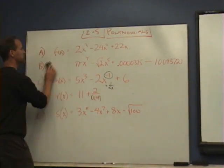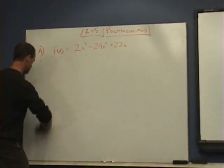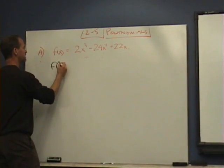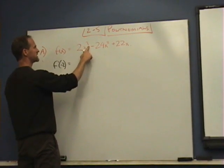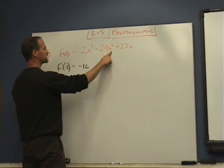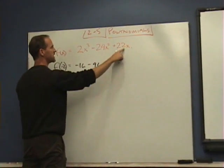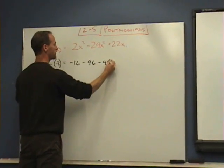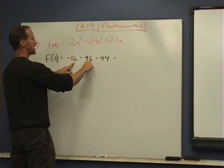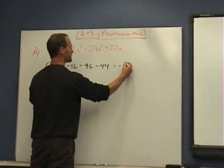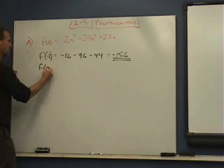If we go back to our original one, this is the type of thing you might have as a homework problem. They might ask you to find f(-2) for instance. Well, we just take that -2 and plug it in there. -2 to the third power is -8 times 2 is -16. -2 squared is positive 4, positive 4 times -24 is -96, and then -2 times 22 would be -44. So we can just do the math and we're going to get -60 if we combine these two, and -96 is going to give us -156. So that's f(-2).